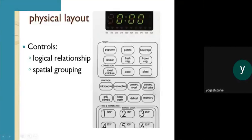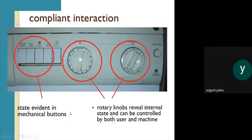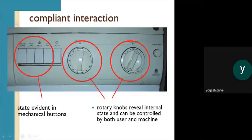Physical layout: as shown in the diagram, a panel with different buttons is provided in front of the user. It has controls with logical relationships and spatial grouping, similar to an AC panel at home. In complaint interaction, the state is evident in the mechanical button. Rotary knobs reveal internal state and can be controlled by both user and machine — the machine controls it automatically, and the user controls it manually.